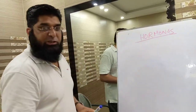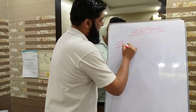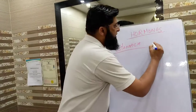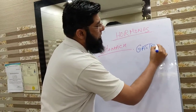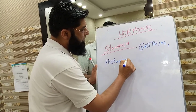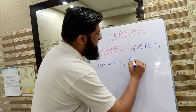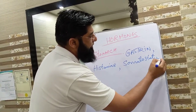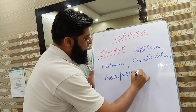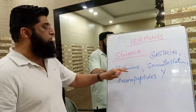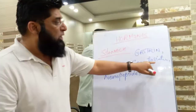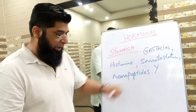Our next target organ is the Stomach. The important hormones produced in the stomach are: Gastrin — the most important — Histamine, Somatostatin, and Neuropeptide Y. These are important hormones produced by the stomach.